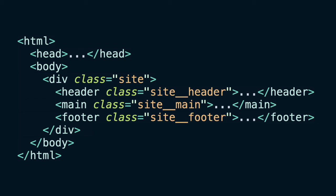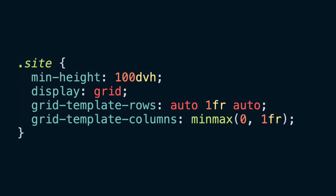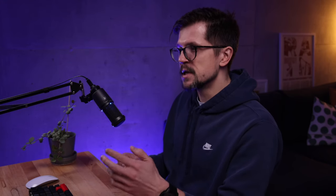Feel free to open the demo, which I linked in the description. We have a top-level div with the class site containing three elements: header, main, and footer. In CSS, I use grid to ensure the footer remains at the bottom even if the page has minimal content — I've covered that in a separate video. What's important here is that we're setting the header and the footer to auto, so they'll grow or shrink depending on how much content is inside, but they won't grow beyond what's needed.